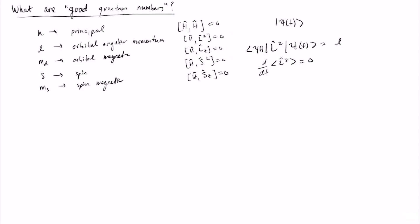Whenever a quantum number corresponds to an operator that is conserved by the Hamiltonian, it is referred to as a good quantum number. Each of these can be considered good quantum numbers if we're dealing with the purely electric Hamiltonian.